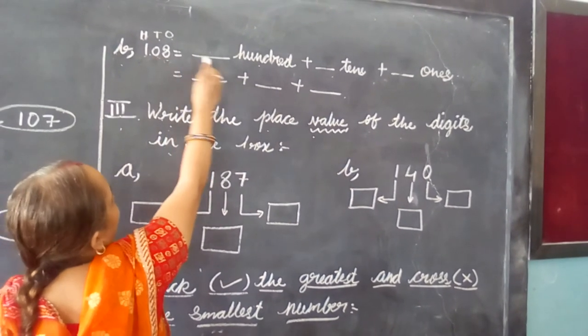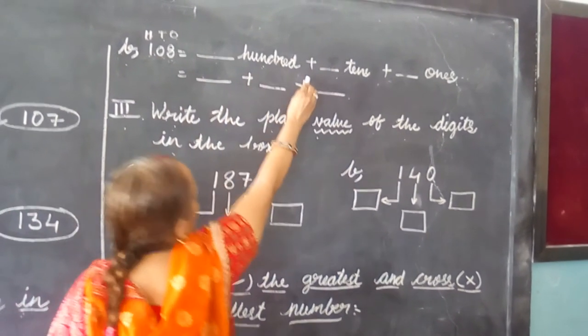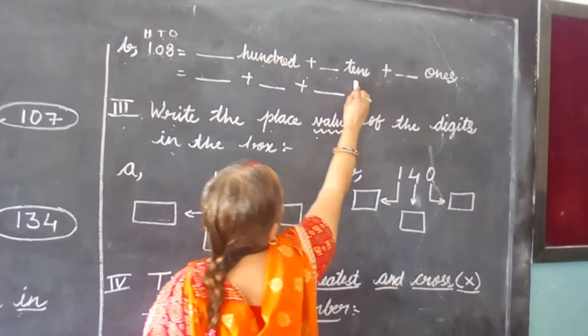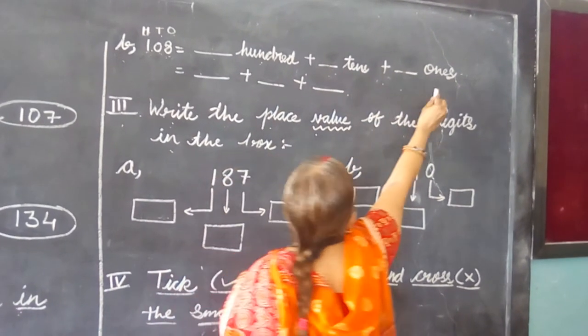108 equals dash hundred plus dash tens plus dash ones.